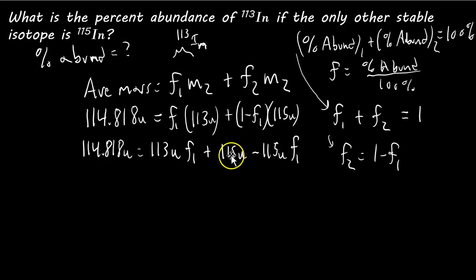So, we'll bring this term to the other side, so we'll subtract both sides by 115 u. So that'll be 114.818 u minus 115 u. And, now this term's gone, right? So, all we have left are these terms on the right-hand side. We're going to factor out the F1.